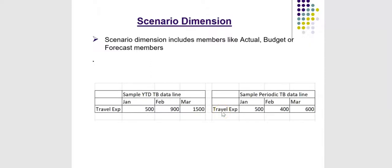Let us go through scenario dimension and its properties. A scenario dimension includes members like Actual, Budget, or Forecast. Before going to scenario dimension member properties, let us understand what is the YTD trial balance and what is the periodic trial balance. A trial balance may contain asset accounts, liability accounts, revenue, expense, and equity accounts.